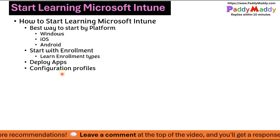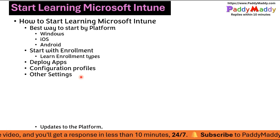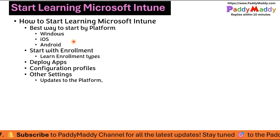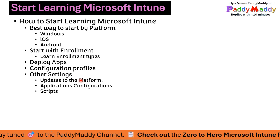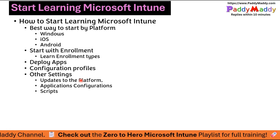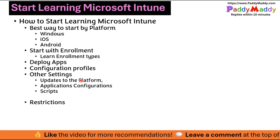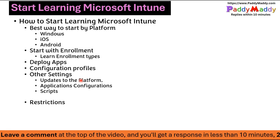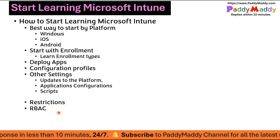Starting by platform, you pick one and apply all these things: enrollment, application deployment, configuration profiles, and additional settings such as operating system updates for Windows, iOS, or Android. You can also set up application-specific profiles — for example, Outlook auto-configured when a user logs in on mobile. Additionally, you can apply restrictions, such as blocking older versions of Windows or older Android devices, and work with role-based access management.